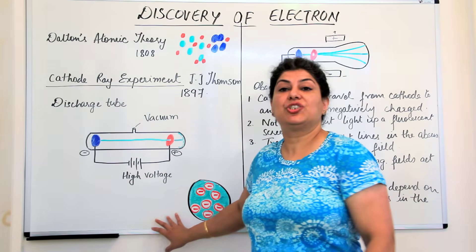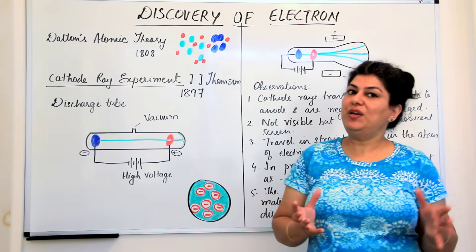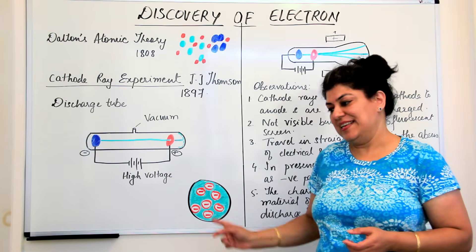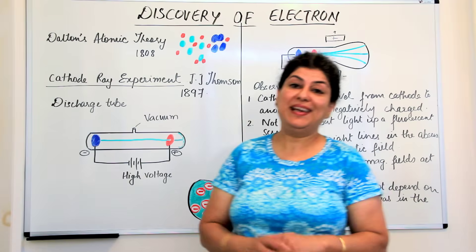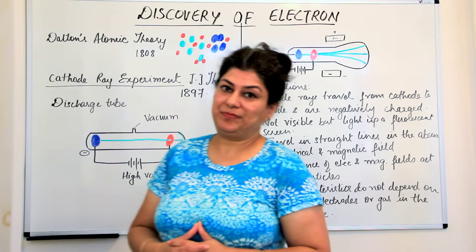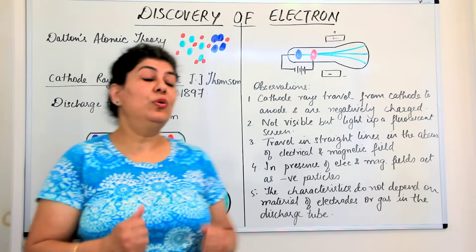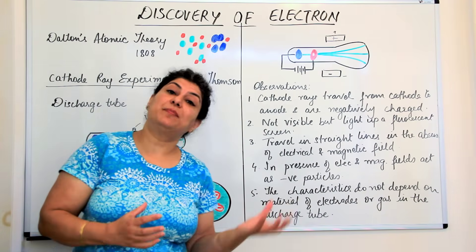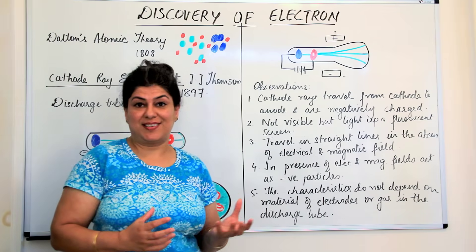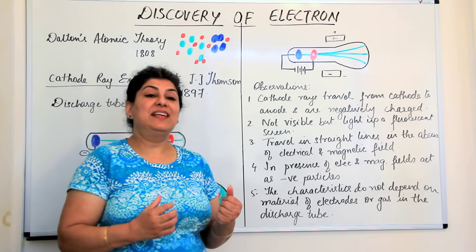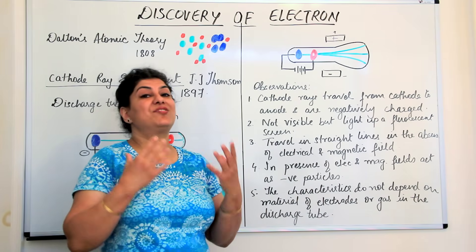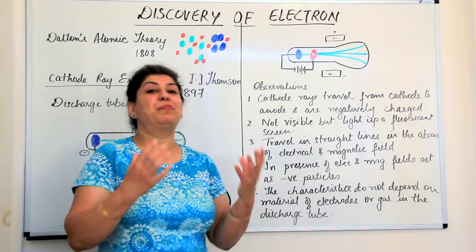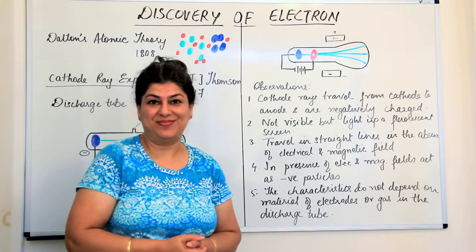Although this was just a rudimentary idea — and today we know an atom does not look like this — this was the model proposed by Thomson. In the next video we'll be discussing how the other subatomic particles were discovered, continuing the story of building up the structure of an atom.